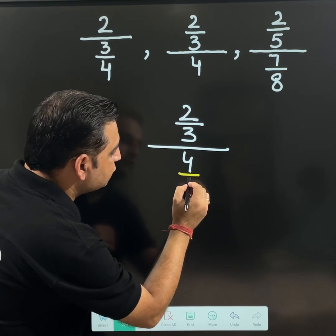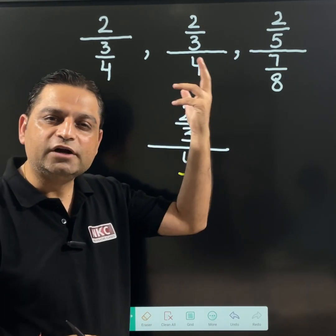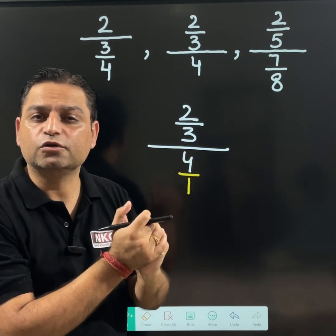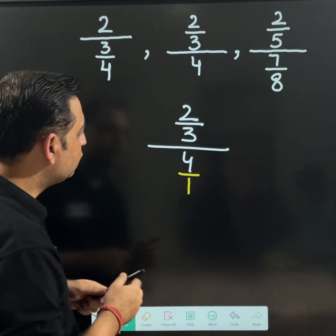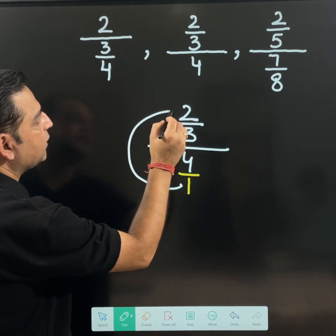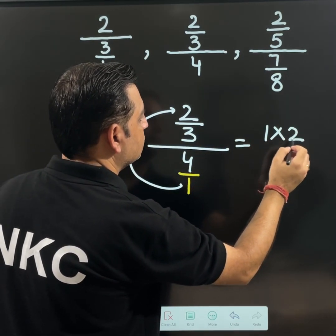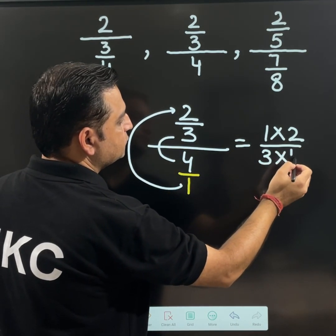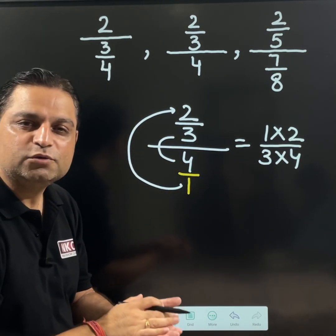Write 4 as 4 over 1. The way you wrote numerator as 2 over 1. Because we need fractions in the numerator as well as denominator both sides. Now if you see this 1 is multiplied by 2. And middle 3 and 4 are multiplied with each other. This is the only concept you need to remember.